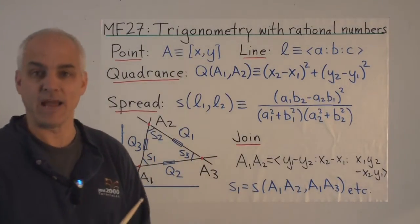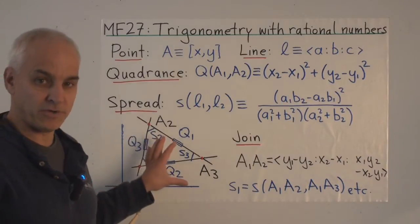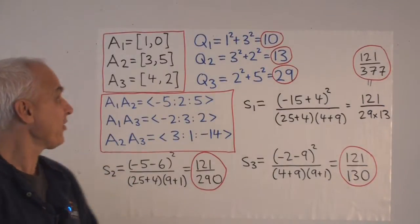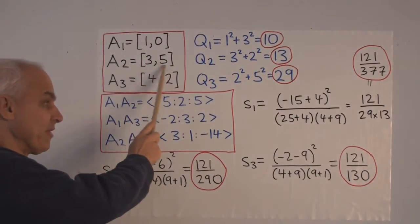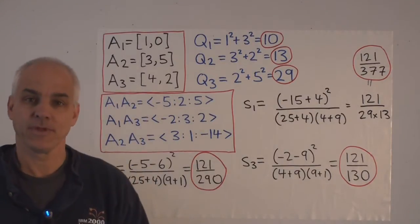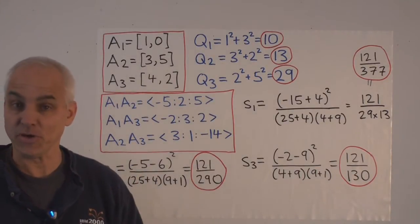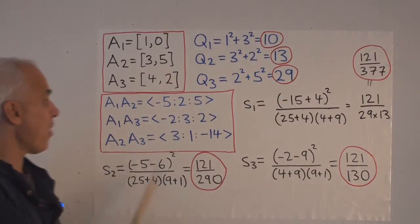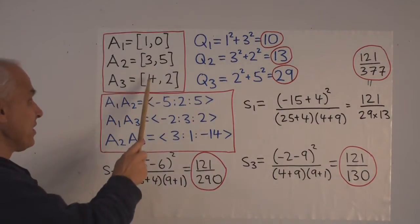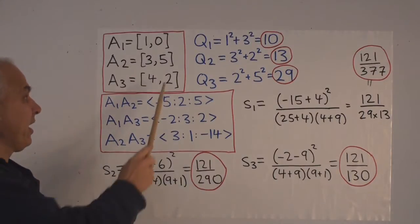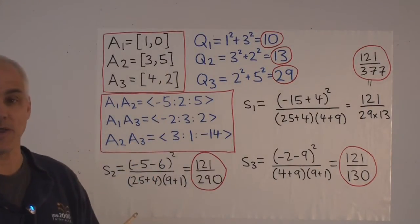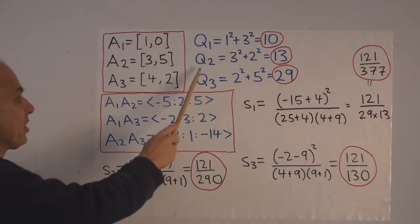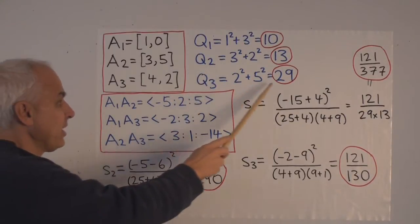Let's look at a particular example where we can compute the quadrances and spreads for three specific points. a1 is (1,0), a2 is (3,5), and a3 equals (4,2). To illustrate how relatively easy it is to compute with these quantities, let's calculate the quadrances first. Q1 is the quadrance between a2 and a3: 1² plus 3² equals 10. Similarly, q2 is 13 and q3 is 29.